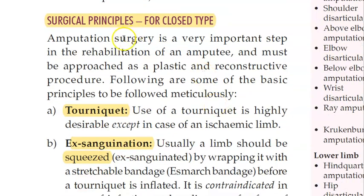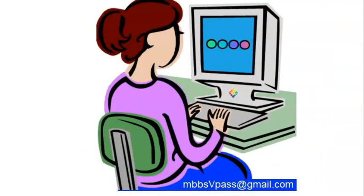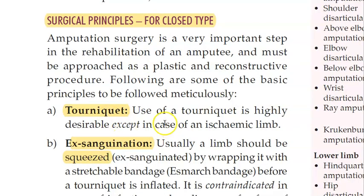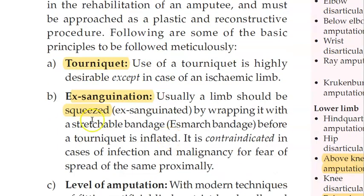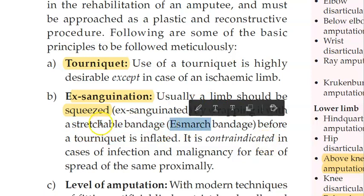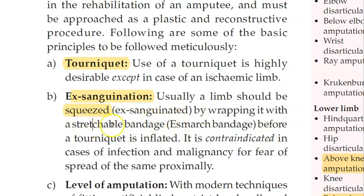Now let us look at how to perform the procedure. First, if there is bleeding, you apply a tourniquet to stop hemorrhage. Then you squeeze the limb by wrapping it with a stretchable bandage to express blood out of the limb, and only after that do you inflate the tourniquet.